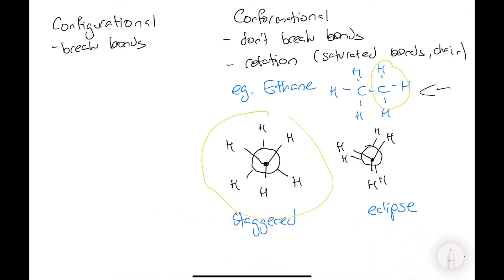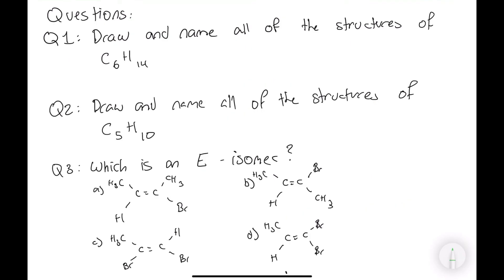So the more stable one would be staggered. As this is when the hydrogens are furthest away from each other. Therefore, there is less electron repulsion.